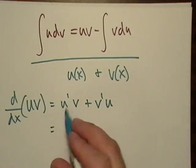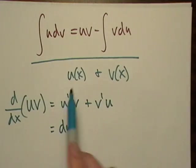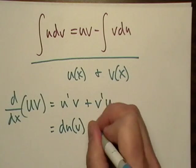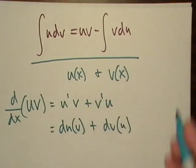And let's make this a little, let's write du instead of u prime. Let's just write du, multiply by v, and dv, u.